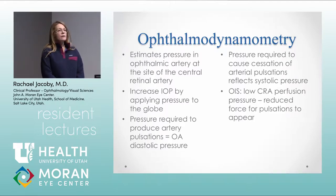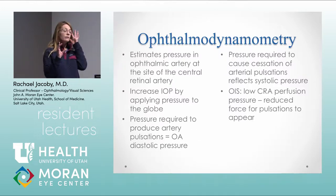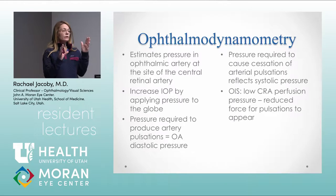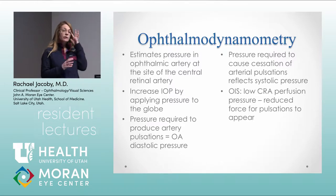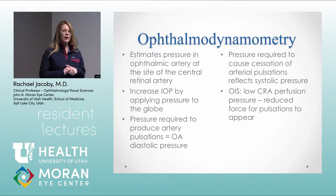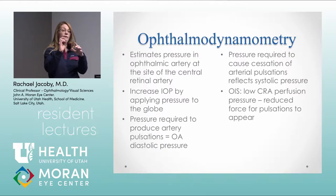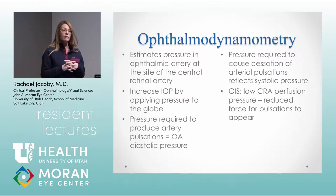With ophthalmodynamometry, you put gentle pressure on the globe while looking with the indirect ophthalmoscope, and you're looking for cessation — you'll start causing arterial pulsations. You shouldn't be able to do that in a normal eye, but in eyes with poor perfusion you can overcome the ophthalmic artery perfusion pressure with just gentle digital globe pressure. If you can overcome the central retinal artery and start to see pulsations, that's an indication of reduced perfusion pressure.